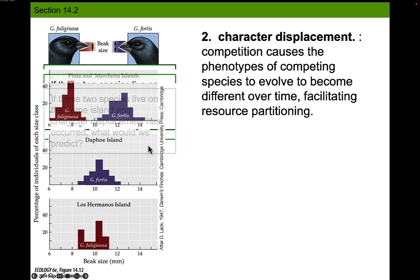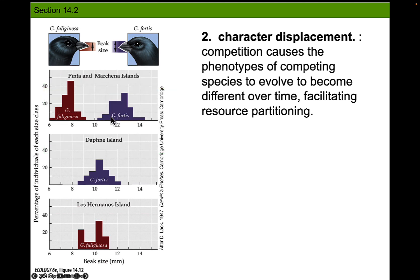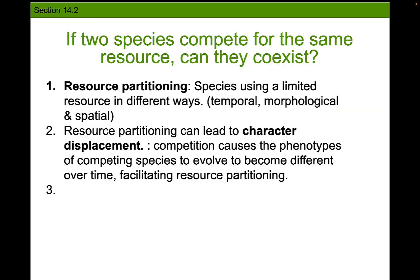And that's what we find. On the two particular islands where both bird species live together, G. fortis has larger beaks and feeds only on larger seeds, and the other species has smaller beaks and feeds only on smaller seeds. What's happened here is character displacement — they've actually evolved adaptations to help them partition this resource.